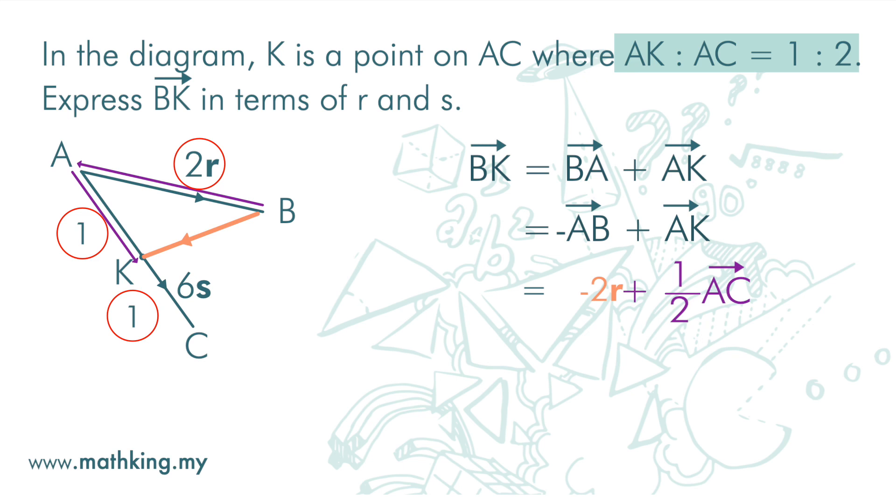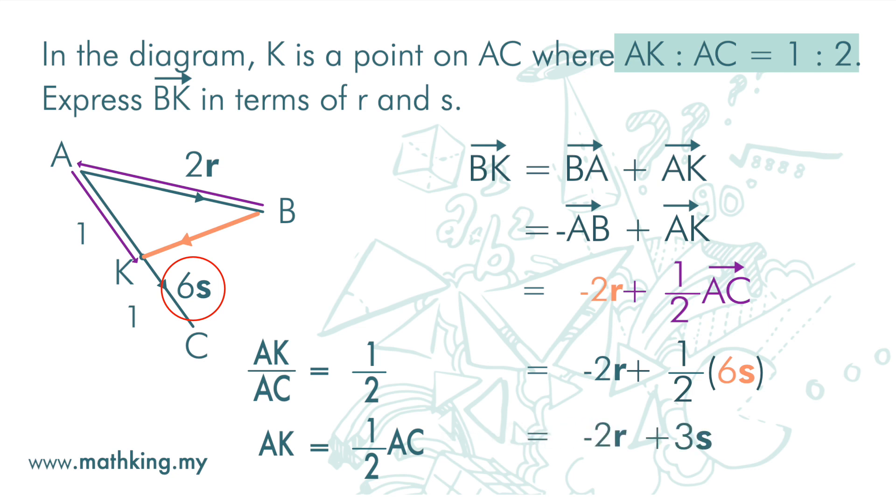Or, we can use ratio. AC is 6S. So, vector BK is negative 2R plus 3S. OK.